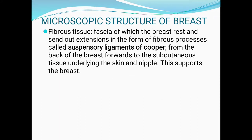Fibrous tissue: the fascia of which the breast rests sends out extensions in the form of fibrous processes called suspensory ligaments of Cooper, from the back of the breast forward to the subcutaneous tissue underlying the skin and nipple. This supports the breast.